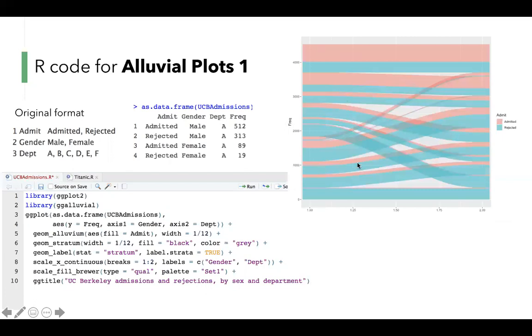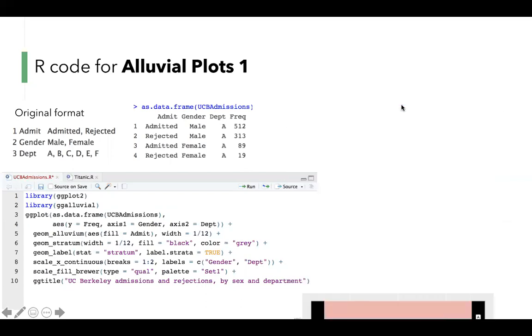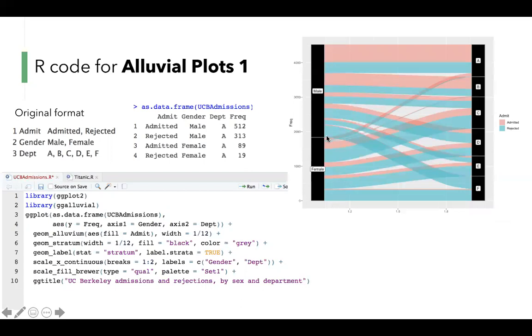After that, we use geom_alluvium to set some characteristics of the alluvia and use geom_stratum to set the characteristics of the strata. The black parts change the width, fill, and border color.